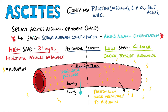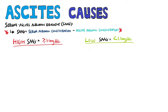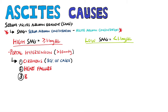Based on a high or low serum ascites albumin gradient, we can categorize the causes of ascites. Ascites with a high gradient is usually caused by portal hypertension, meaning increased pressure in the portal vein, which is defined as above approximately 10mm of mercury. So things like cirrhosis, heart failure, Budd-Chiari syndrome, and portal vein thrombosis are all causes here.